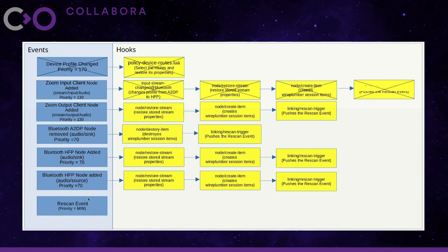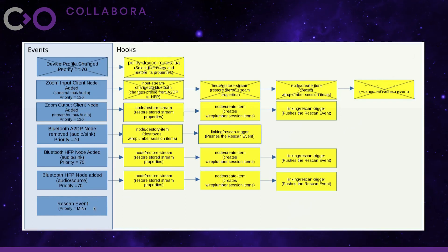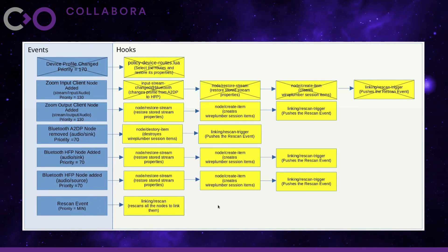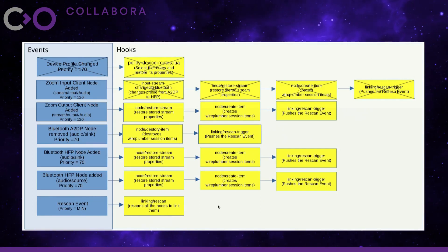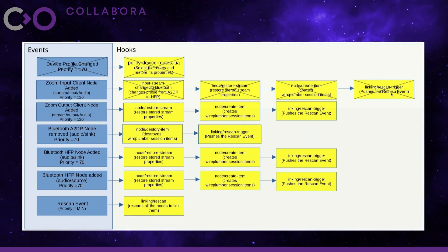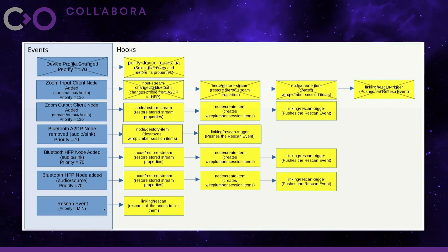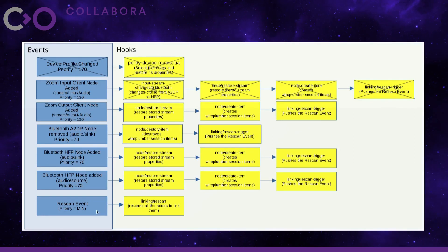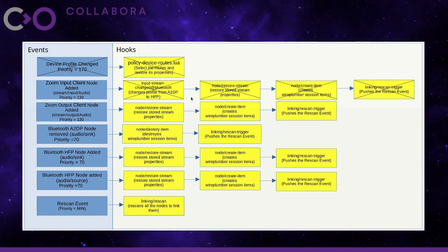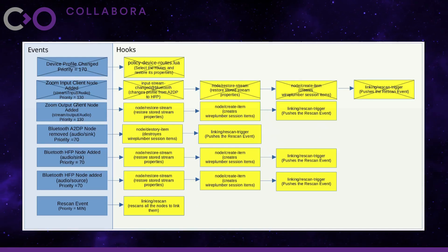The next hook is the rescan trigger hook. The rescan trigger hook pushes the rescan event. The rescan event happens to carry the lowest priority, so it is pushed to the bottom of the stack. A bit on what rescan is: rescan is the process of linking and unlinking the nodes. The rescan trigger, instead of running the rescan process directly, is actually postponing its execution by pushing an event. We are done with all the hooks here, so this event will be discarded.